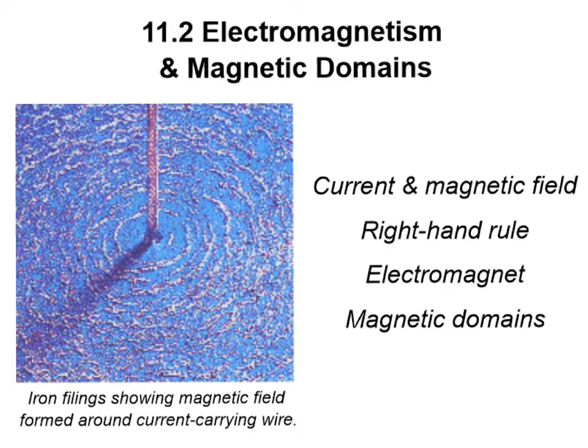In this picture, iron filings have been sprinkled around this current carrying wire, and they show where the magnetic field lines are.